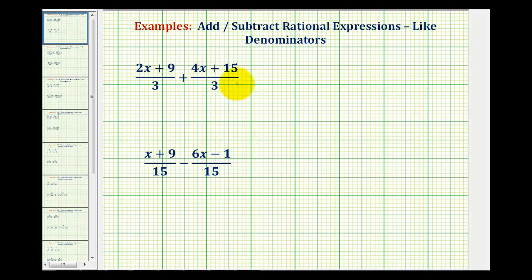So to add or subtract rational expressions with like denominators, we add or subtract the numerators, and the denominator stays the same. So for this first example, the denominator will stay three, and then we'll have the quantity two x plus nine, plus the quantity four x plus fifteen.